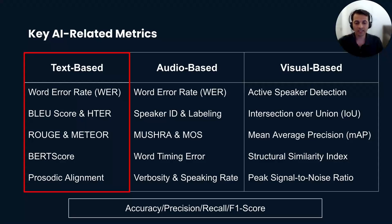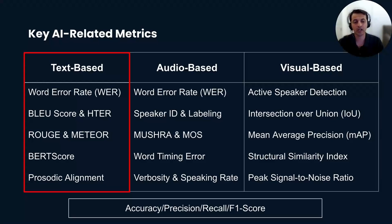The last text-based metric on this list is Prosodic Alignment (PA), which measures the accuracy of placement of phrase boundaries considering the prosodic structure of the original input.